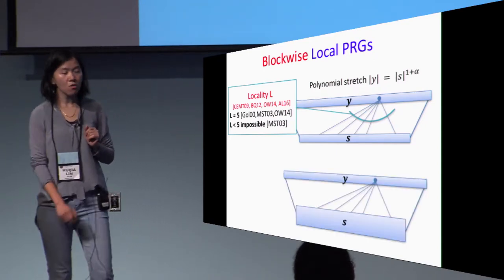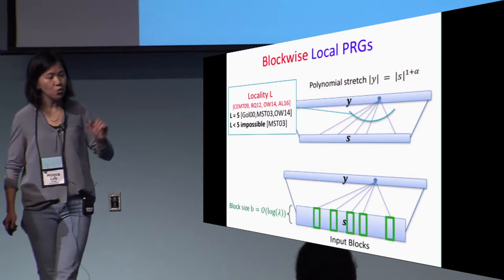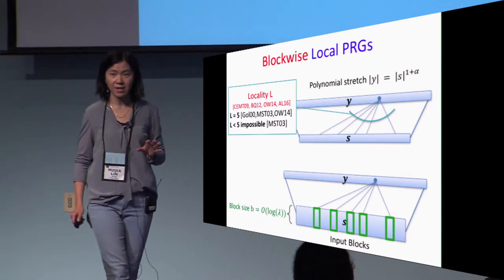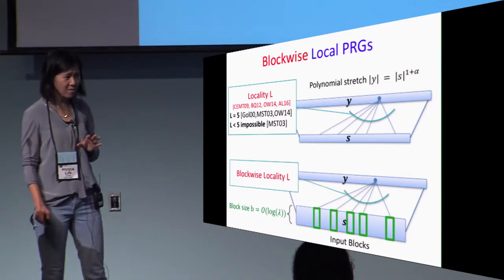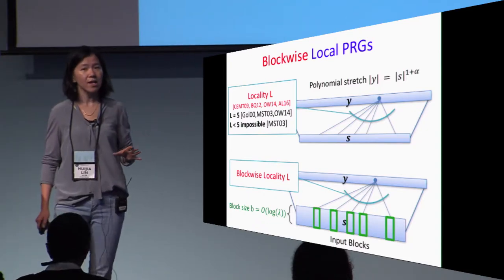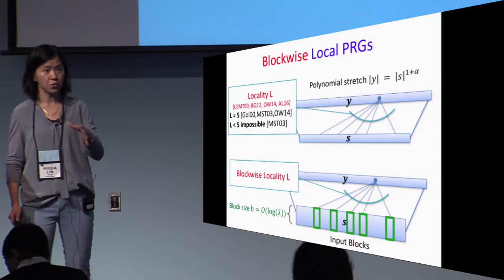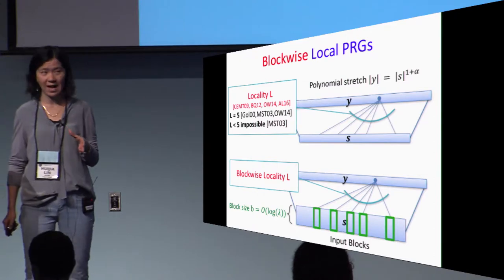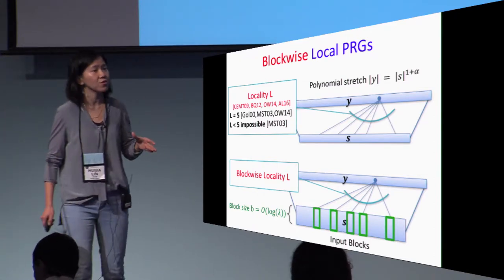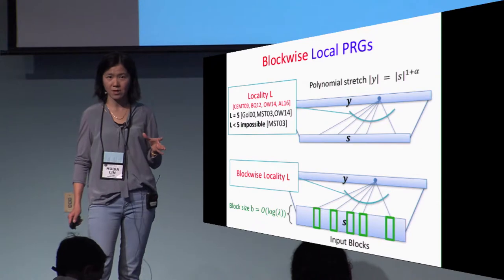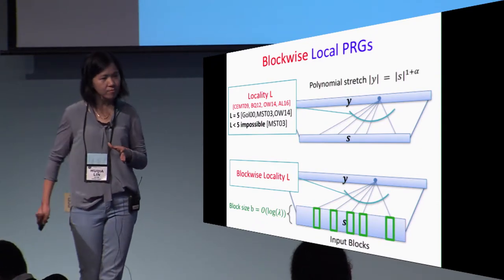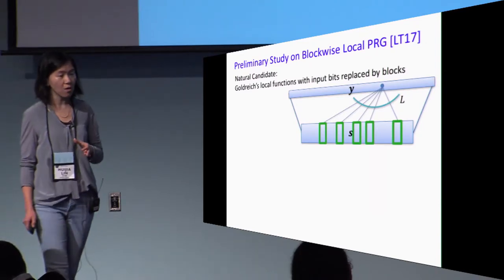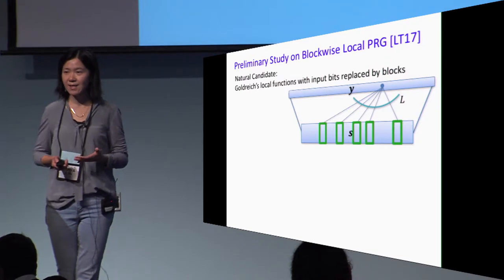When we go to blockwise locality, as the name suggests, we're going to swap each input bit with an input block restricted to only containing logarithmic number of bits. Now a function has blockwise locality L if each output bit depends on only L input blocks. Note that such a function can in fact have very high actual locality, but it still has the special structure of being local with respect to the input blocks, and that's what we can exploit.